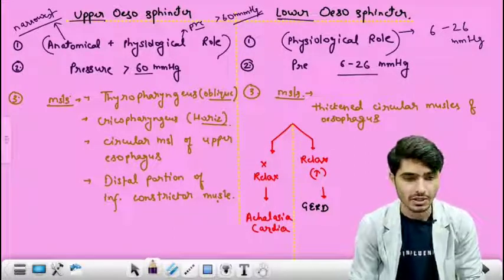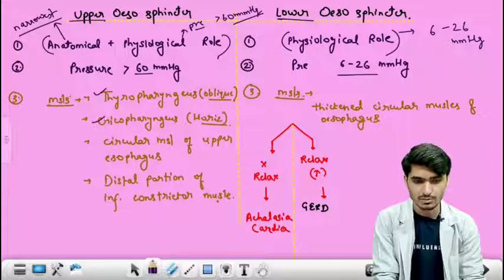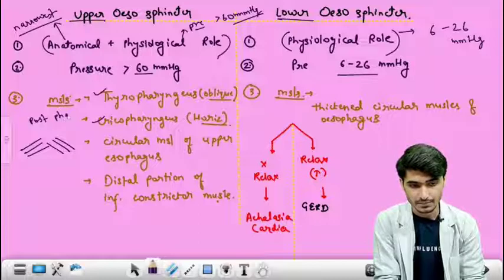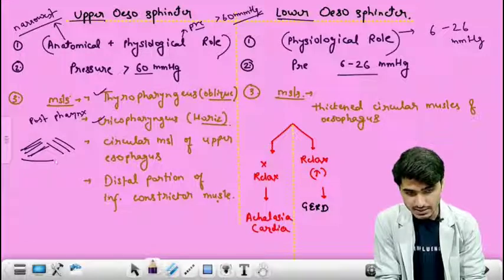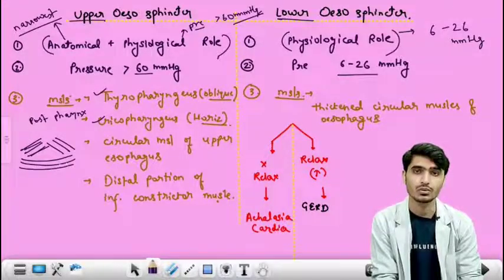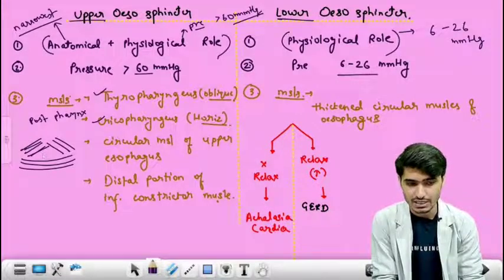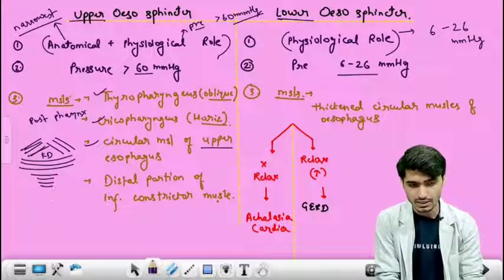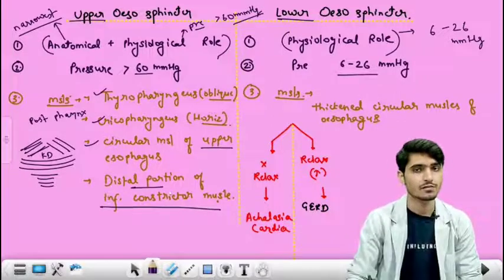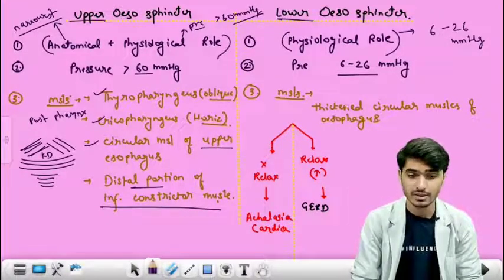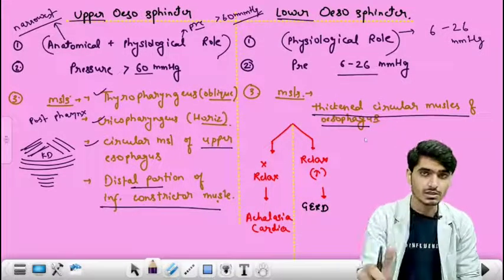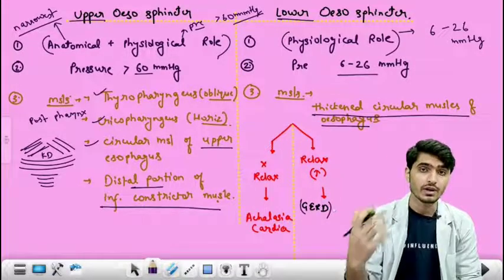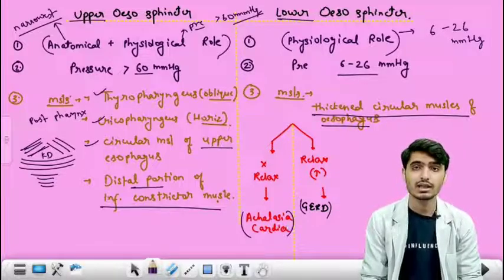The upper esophageal sphincter is made up of the thyropharyngeus muscle and the cricopharyngeus muscle, whose fibers are horizontally oriented. Between them there is a triangular space called Killian's dehiscence, along with circular muscles of the upper esophagus and the distal portion of the inferior constrictor. The lower esophageal sphincter is formed by the thickened circular muscle of the esophagus. When the LES relaxes pathologically, the result is GERD; when it fails to relax, the pathology is achalasia cardia.